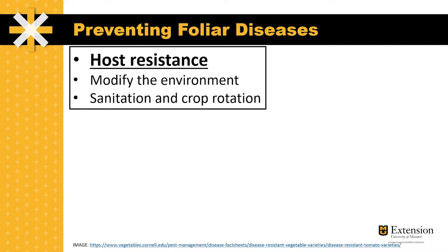Three factors we might want to consider to prevent foliar diseases are host resistance, environmental modification, and sanitation and crop rotation.